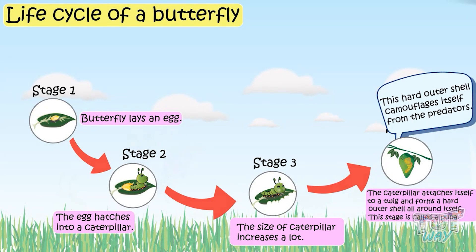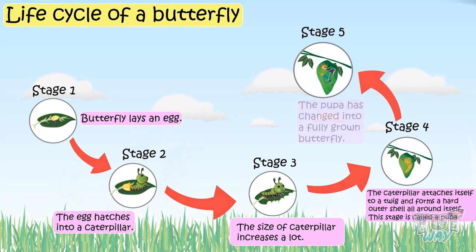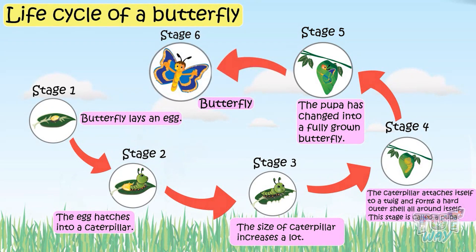Inside this pupa the caterpillar changes into a butterfly, and this hard outer shell camouflages it from predators. After spending a lot of time in this cocoon, the pupa changes into a fully grown butterfly and emerges out of the cocoon. The life cycle then starts all over again as the butterfly lays eggs again.